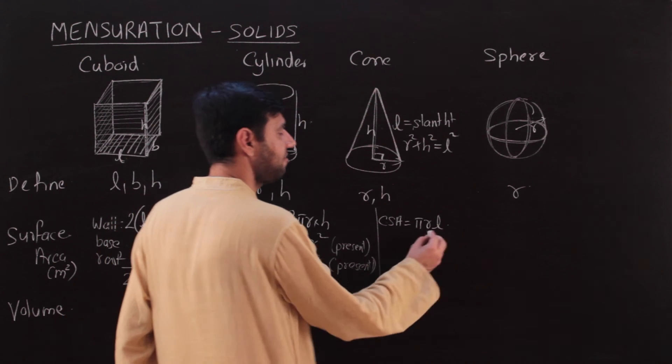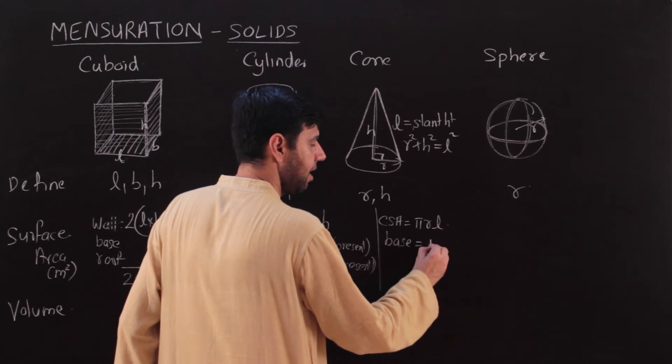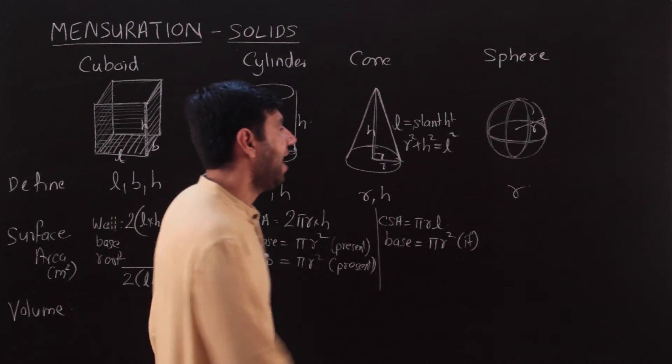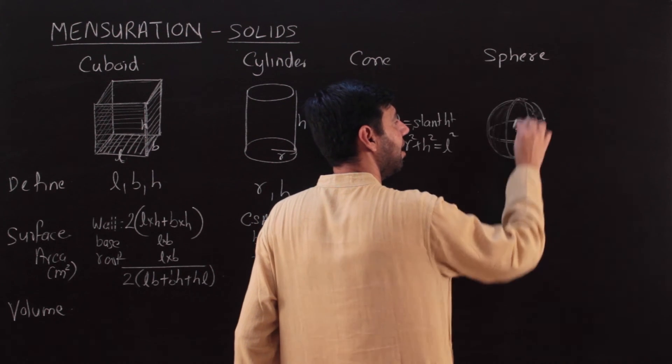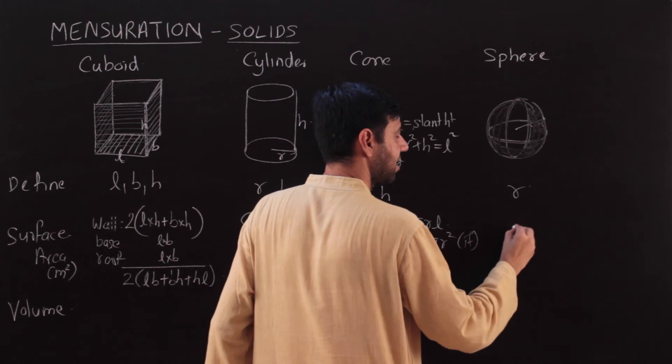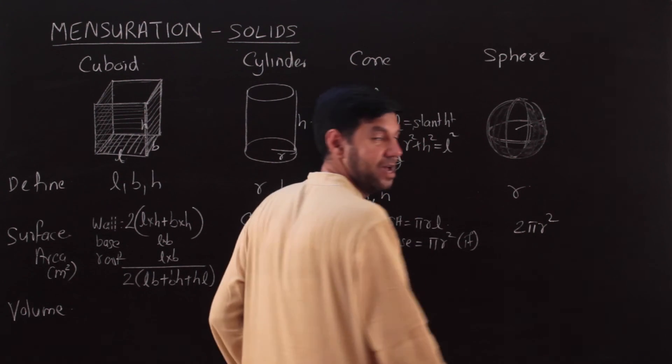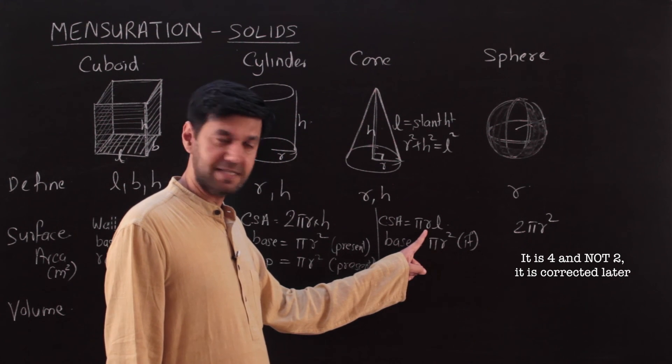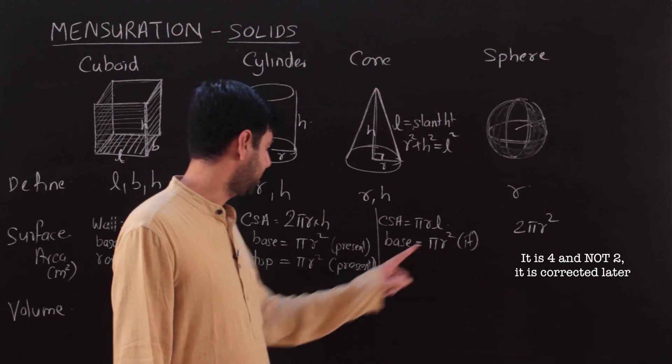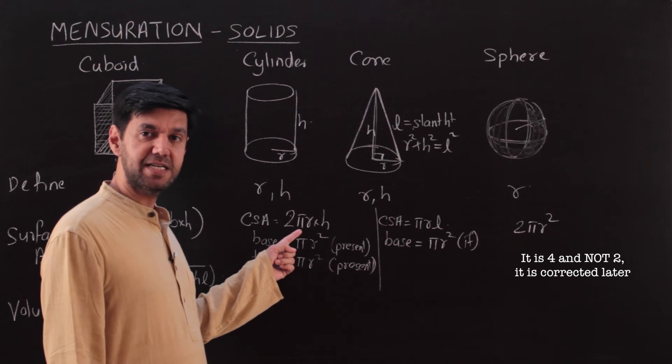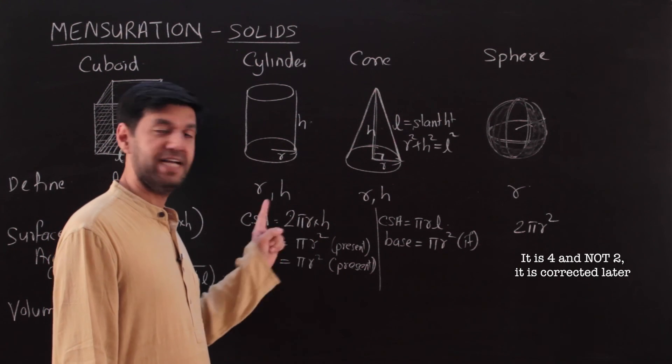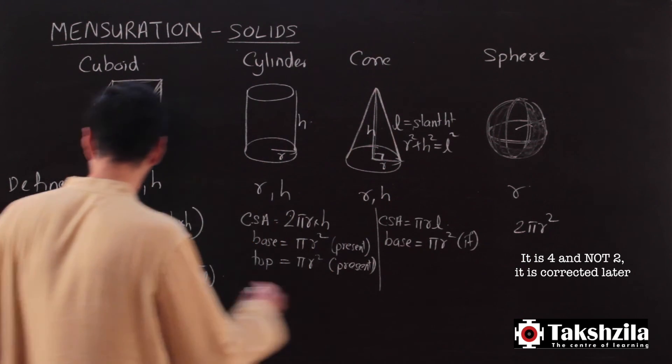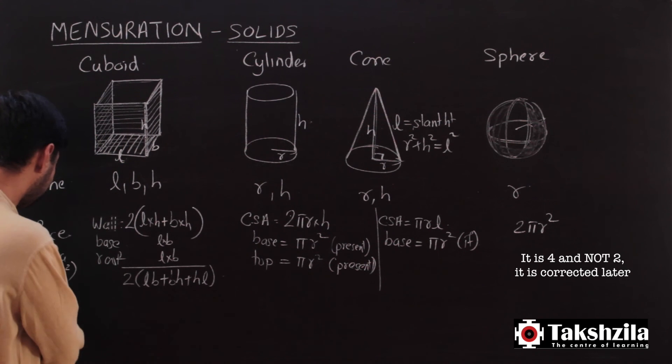If there is a base, the base is nothing but a circle, πr². The curved surface area of a sphere is 4πr². Remember meter square. Let's check: do I have a meter? Radius is in meter, so r² is meter². 2πrh: π doesn't have any units, r into h is meter into meter, so it's meter square. It's just a check to memorize it very fast.